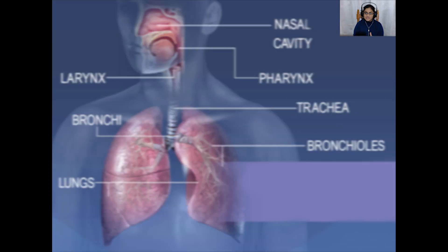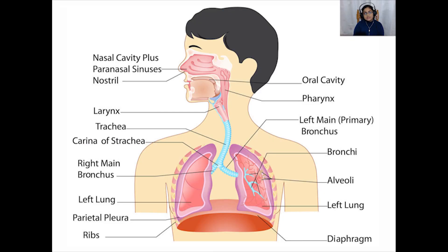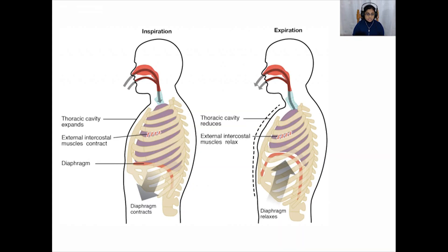Before we look at the respiratory system, we need to understand its structure. The lungs are enclosed in the chest, or the thorax, by the rib cage and a muscular sheet of tissue called the diaphragm. The actions of these two structures — the thorax and the diaphragm — are what bring about the movements of air into and out of the lungs.